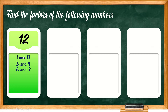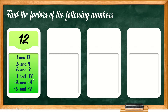Other than positive numbers, we can also multiply two negative numbers — such as negative 3 and negative 4, and negative 6 and negative 2. When you multiply two negative numbers, you obtain a positive answer. Therefore, these pairs are also considered factors of 12.